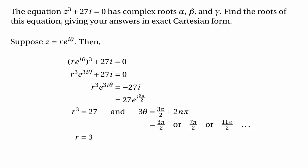So it must be that r is 3, and θ could be π over 2, or 7π over 6, or 11π over 6, or whatever. So now we know what r and theta are — we know the modulus and the argument of z. All that remains is to write z in exact Cartesian form.